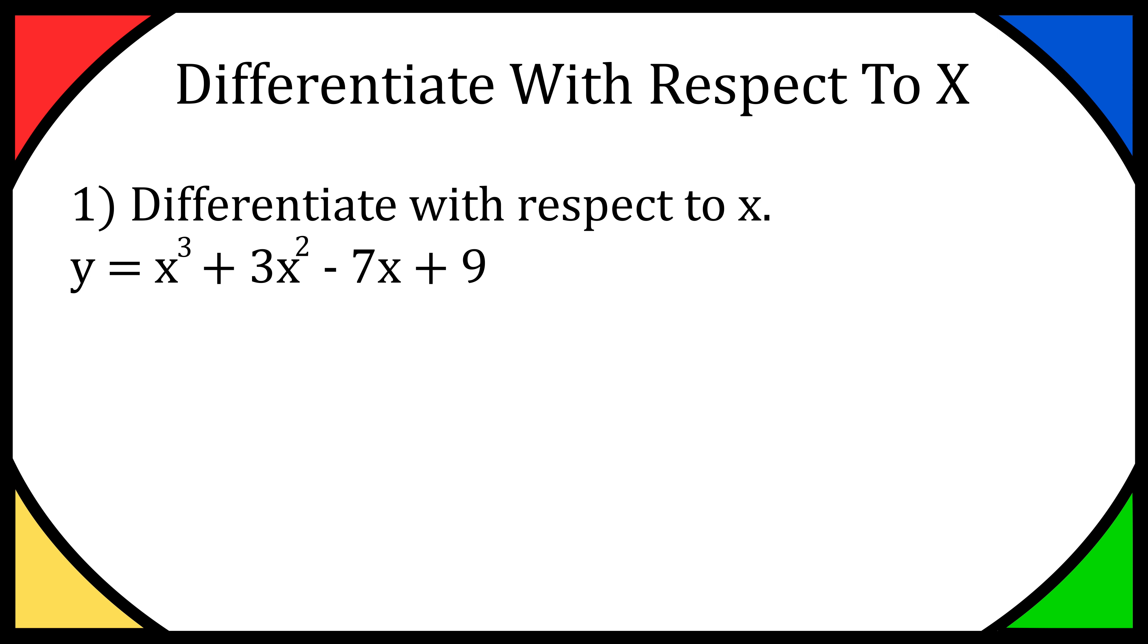We are differentiating y with respect to x, so we write dy/dx. Now we'll work with each part of the function separately. To differentiate x³, bring the power to the front—multiply by the power—and then take one away from the original power. Bring the 3 to the front and take one off the power, giving us 3x².